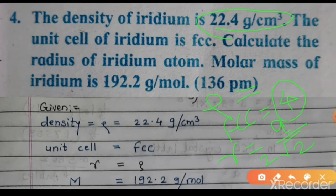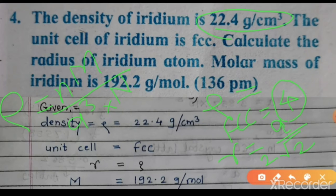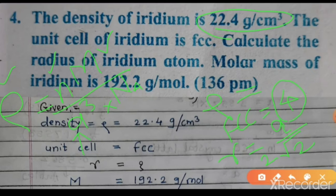In the density formula ρ = nM / (a³ × Nₐ): ρ is density, n is number of atoms, M is molar mass, a is edge length, and Nₐ is Avogadro's number.